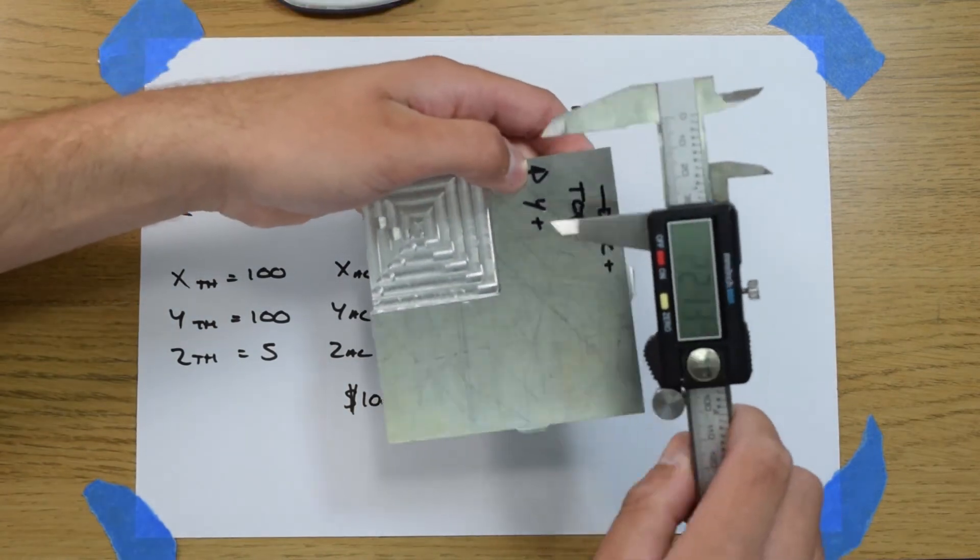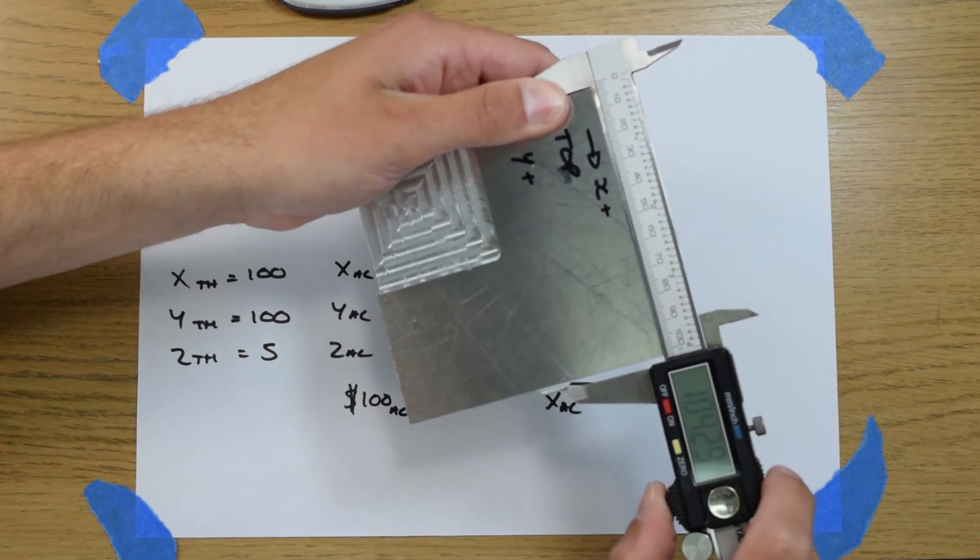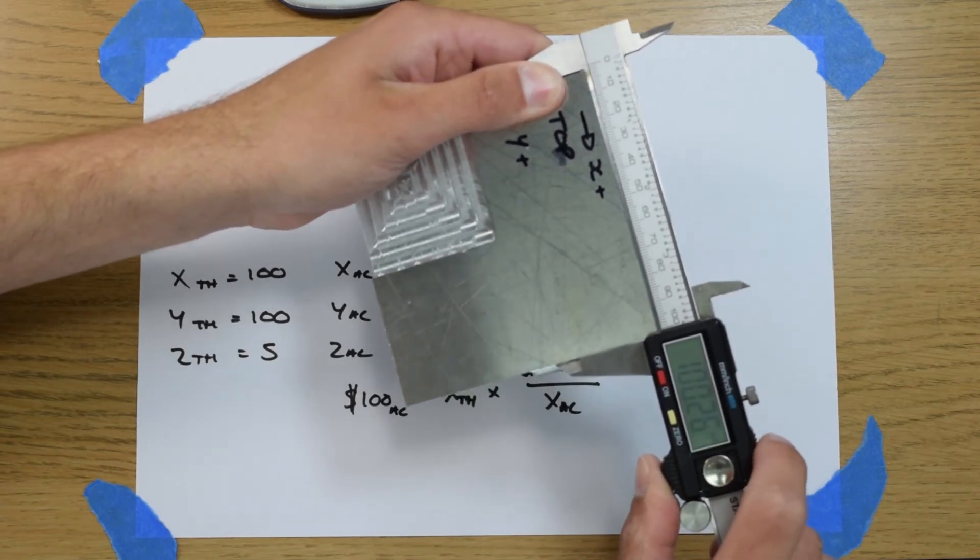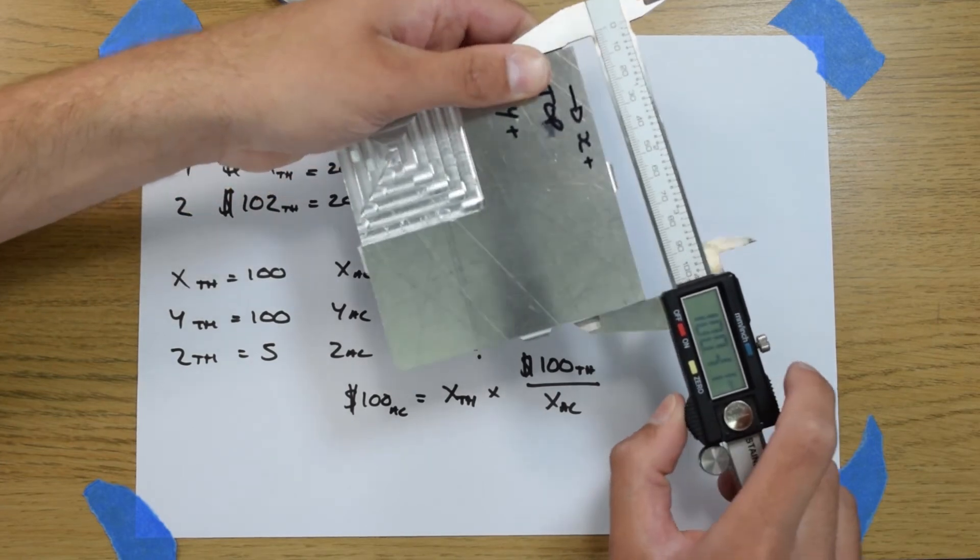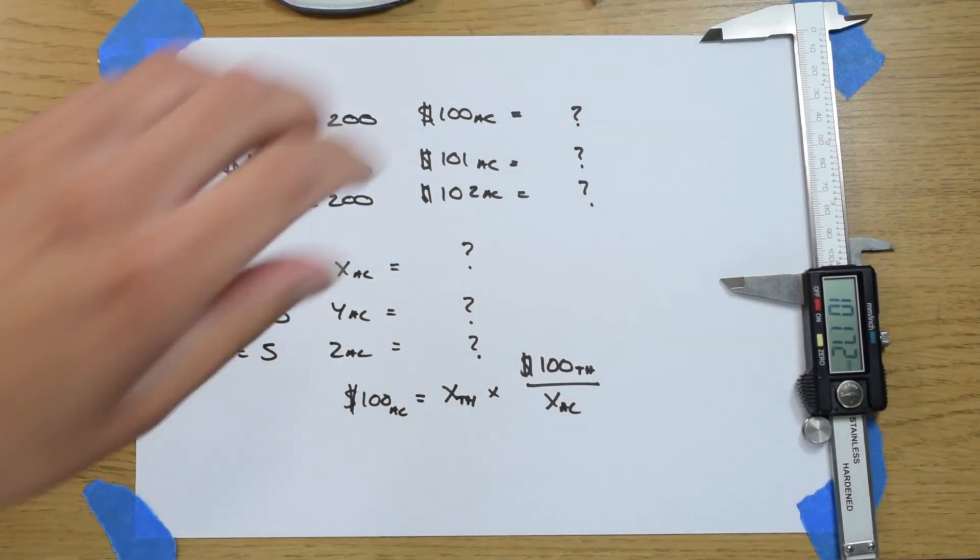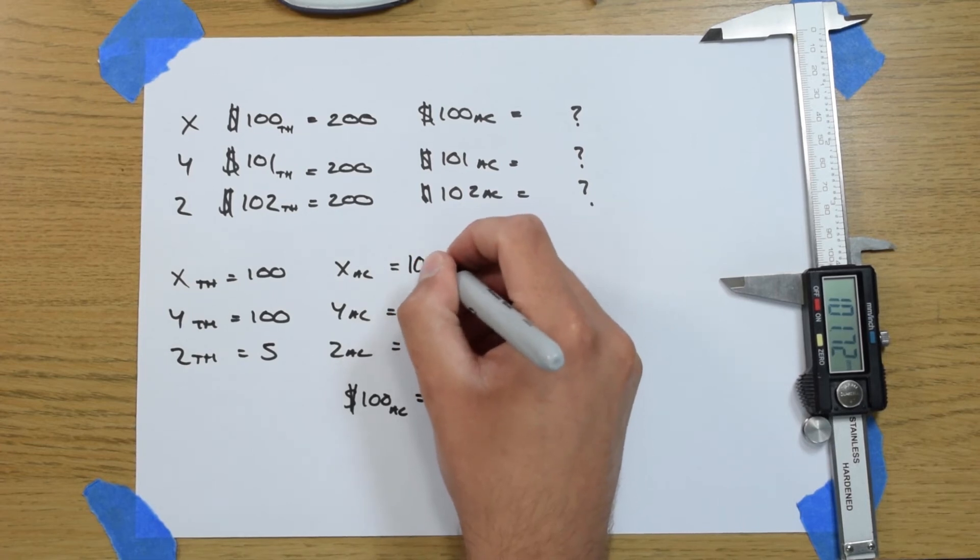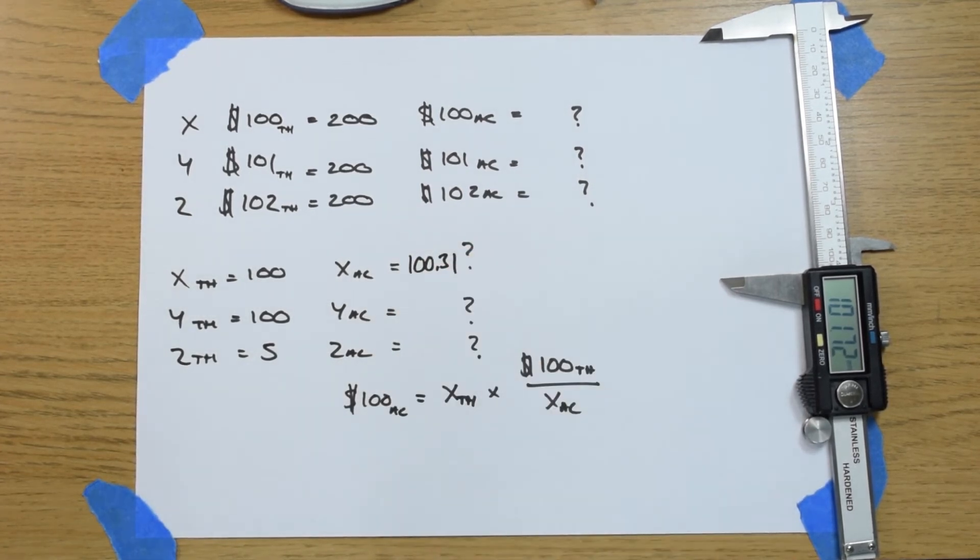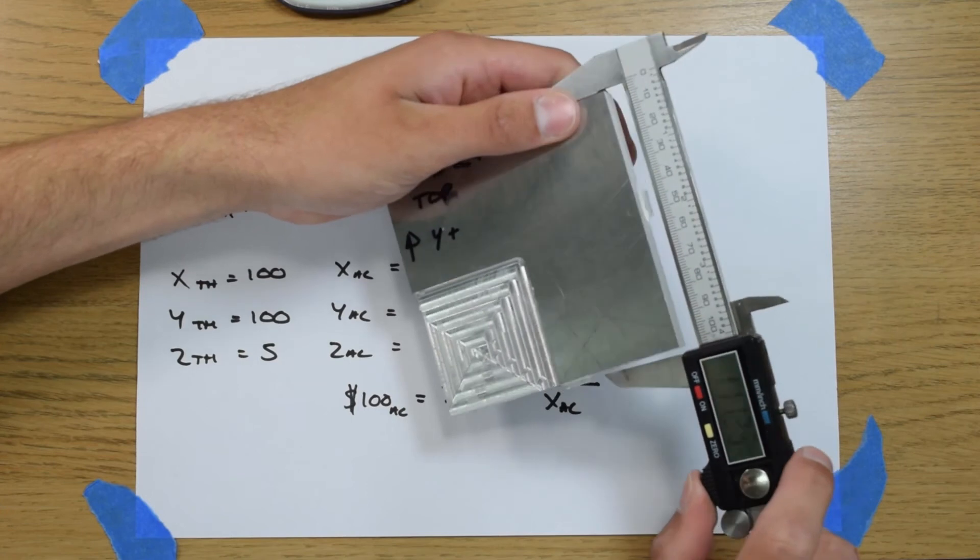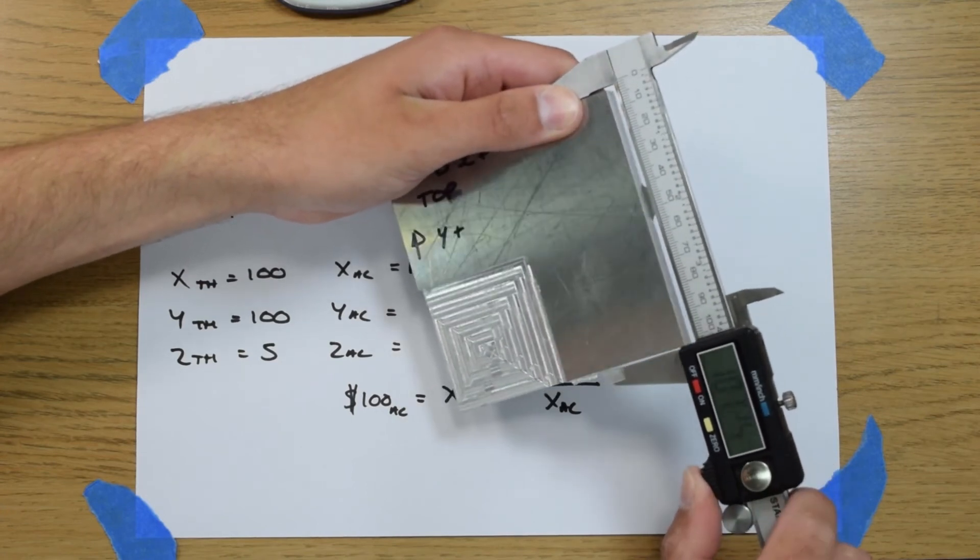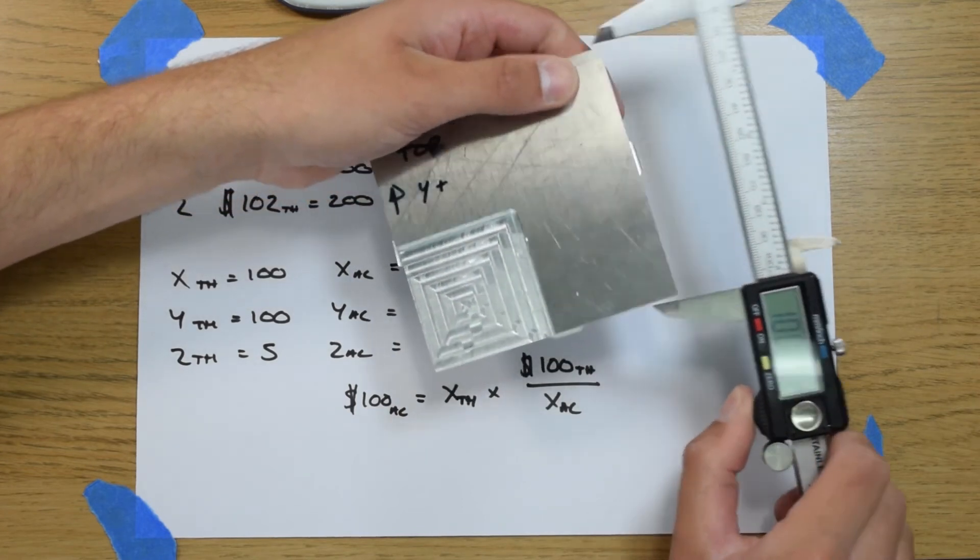So to start off with we're going to measure the X. So you get the piece of metal nice and square in the calipers. So we've got 100.31 for the X. We'll just write that down. 100.31. Next measure the Y. So 100.34. So let's write that down.